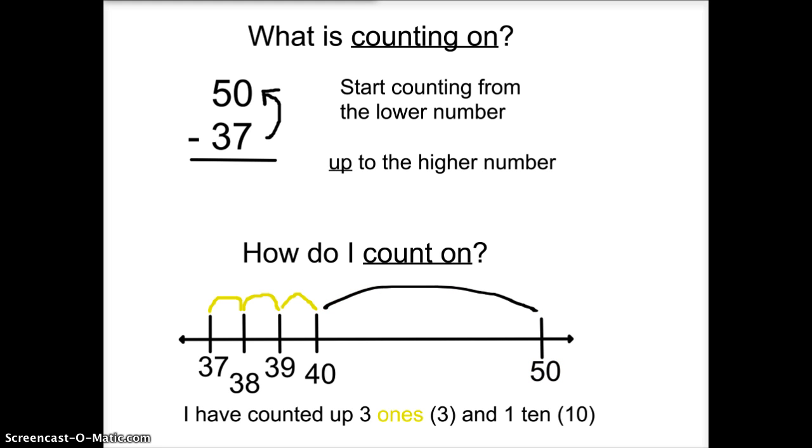I've counted up three 1's and one 10. The difference is 13. So 50 minus 37 is 13.